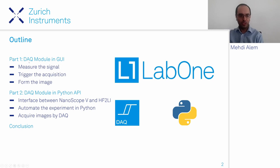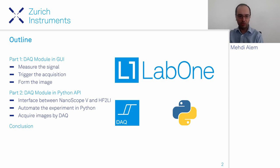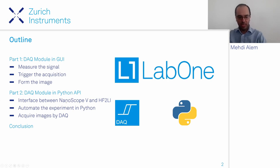In the next half hour, first I will show you the module in the graphical user interface where you can measure and demodulate the signal, trigger the acquisition of data, and make images. Then we will move to Lyon, France, where the same measurement is done in a real lab environment with a microscope using our Python API instead of the GUI to automate the measurement. Then we conclude this tutorial. Let's jump to the LabOne user interface and start a simple measurement.